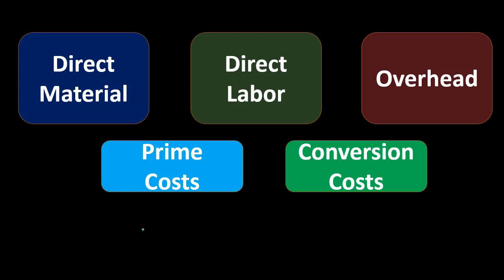This is an added category that can cause confusion with something like direct versus indirect costs — it is a different concept and we need to keep these separated. Prime costs and conversion costs are often used more when working with a process cost system, which differs from a job cost system. They are different from direct costs and indirect costs. Direct costs include direct materials and direct labor, which happen to be the same two components as prime costs, but for different reasons.